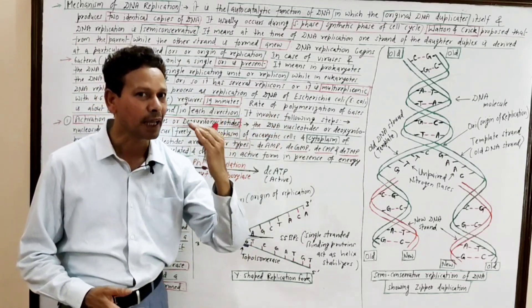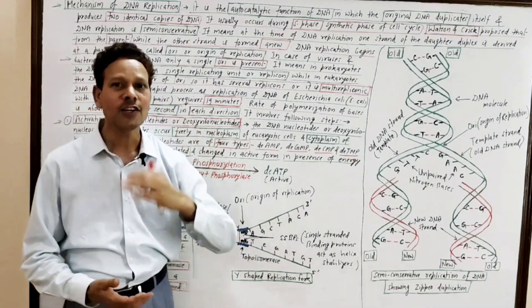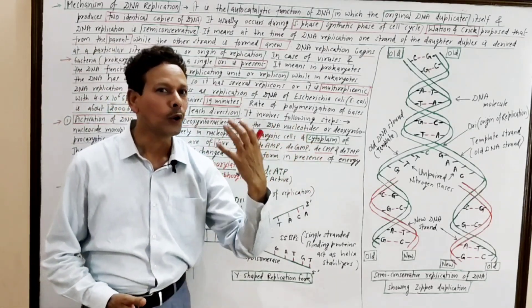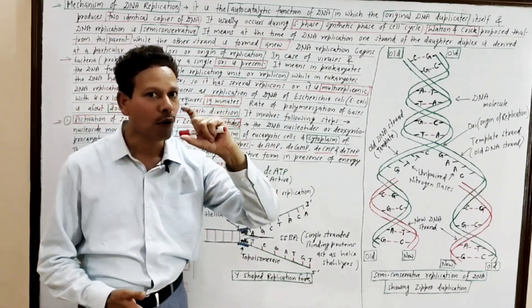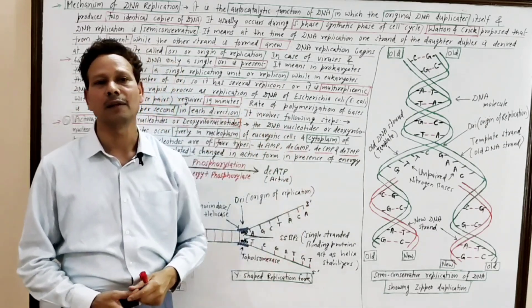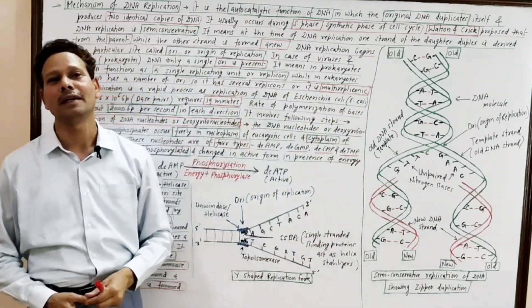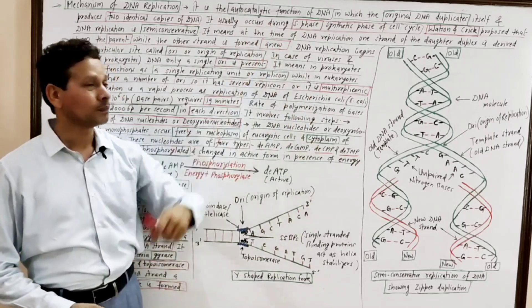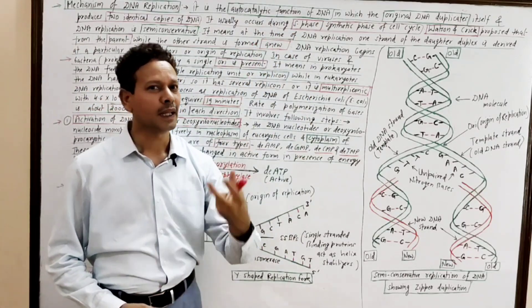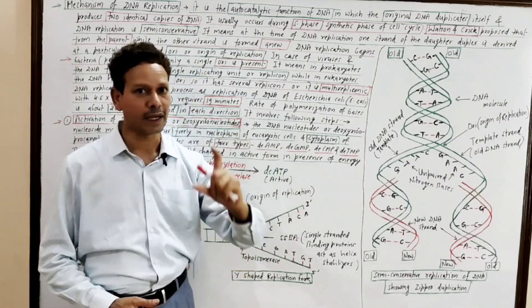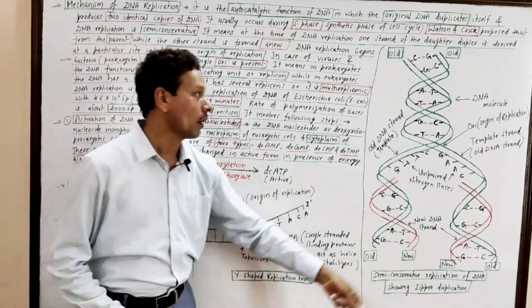DNA replication is an autocatalytic property of DNA in which the original parent DNA produces its carbon copies. This entire process of DNA replication occurs in the S-phase — the synthetic phase — of the cell cycle.